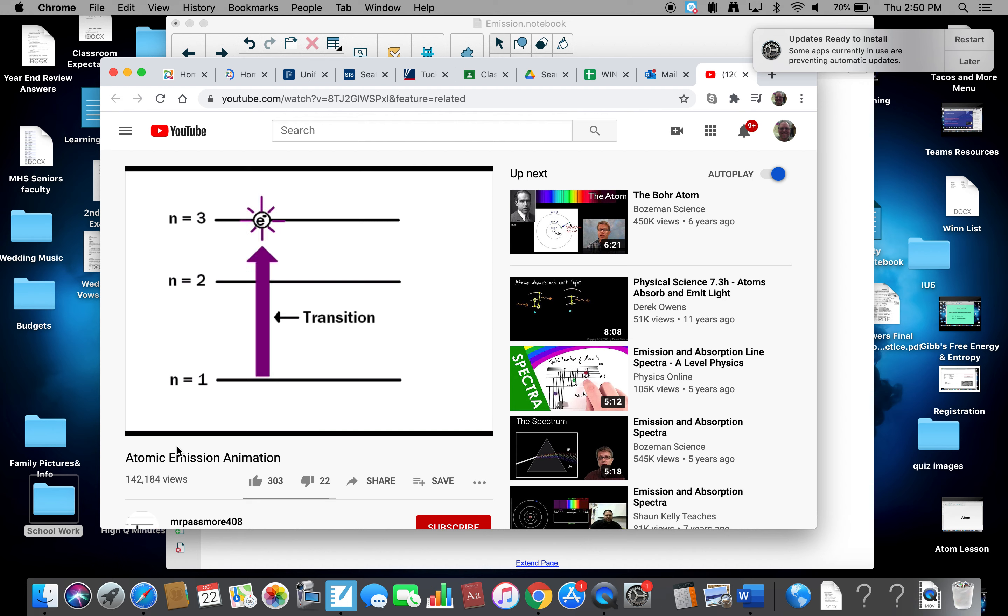Energy hits the electron, jumps it way up. Energy begins to dissipate. The electron can't stay there. It becomes unstable, and it drops back down.